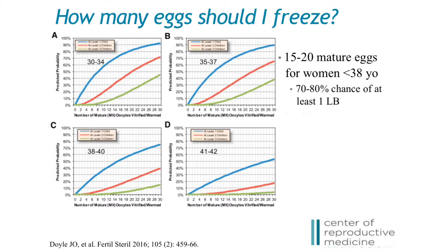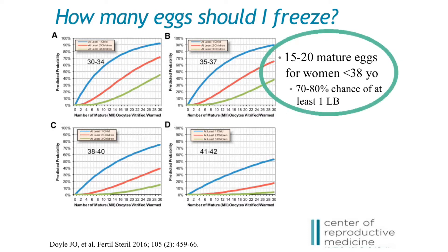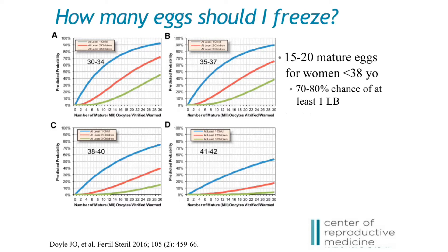This retrospective study reported prediction models for women who had undergone egg freezing for various indications. To briefly summarize, freezing 15 to 20 mature eggs in women under the age of 38 gave them approximately 70 to 80% chance of having at least one live birth. These models can help patients decide at the end of a cycle if their goals were met, or if they would want to consider another IVF cycle to obtain more eggs.